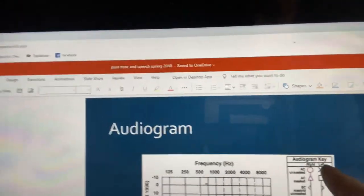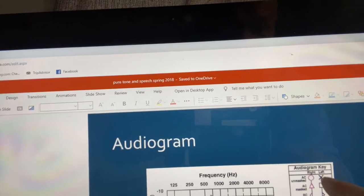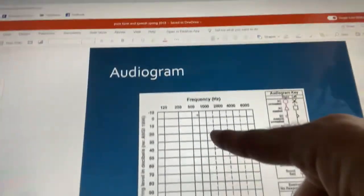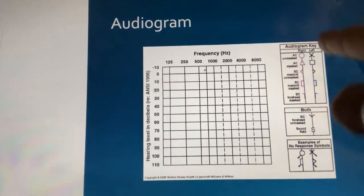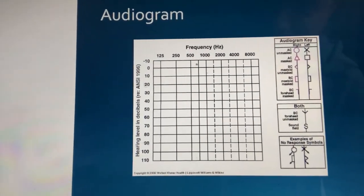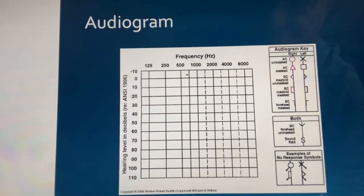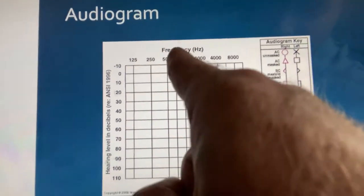The staircase method keeps going down 10 until they don't respond, then up five. Once we get two or three positive responses at the softest level, we mark it on the audiogram. For the right ear we mark a circle, for the left ear an X. We do this for 1,000, 2,000, 4,000, 8,000, 250, and 500 hertz — those six frequencies are the frequencies necessary for speech comprehension.